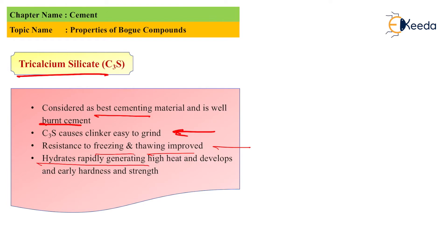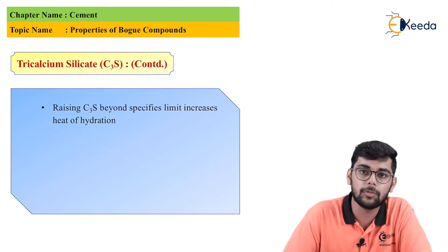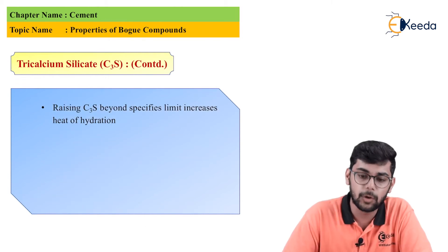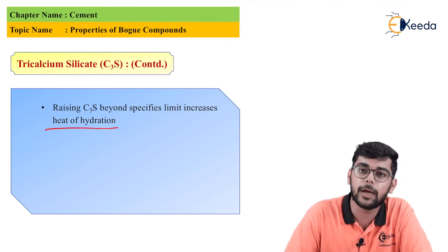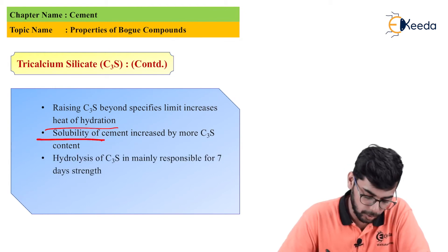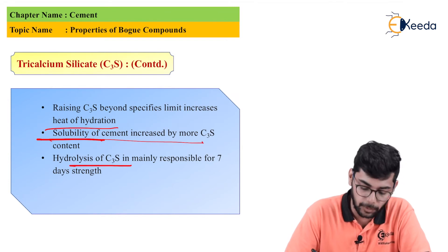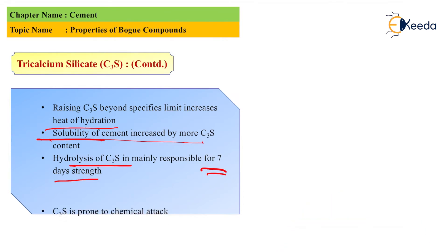C3S hydrates rapidly and gives high heat of hydration and develops early hardness and strength. But raising C3S above the defined limit would cause high heat of hydration, that's highly undesirable. C3S causes high solubility and hydrolysis of C3S is responsible for 7 day strength. Also C3S is prone to chemical attack, and the heat of hydration of C3S is 500 joules per gram.